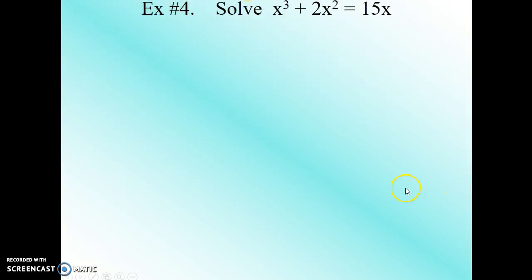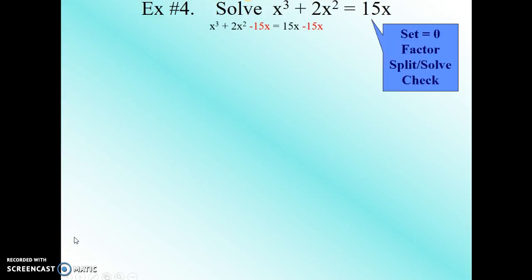All right, let's move on to our next example. Solve x to the third power plus x to the second power equals 15x. Again, here, this equation is not solved for 0, so we're going to subtract 15x from both sides.